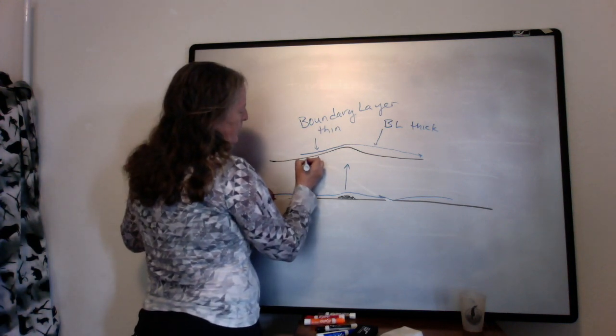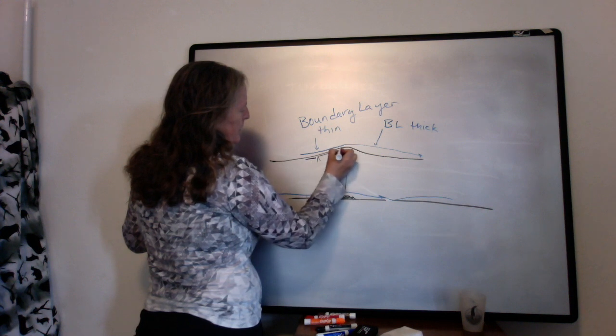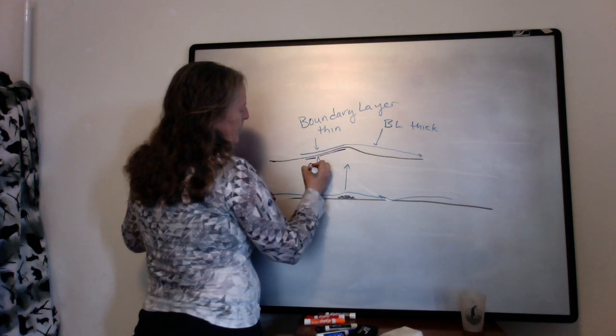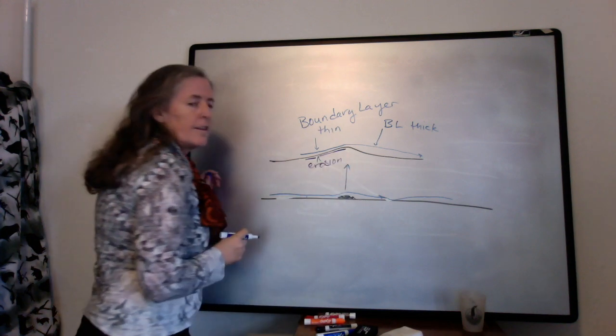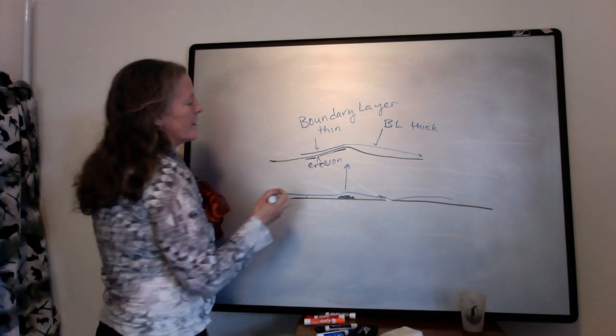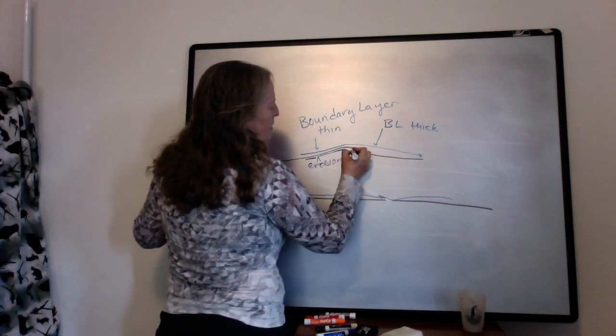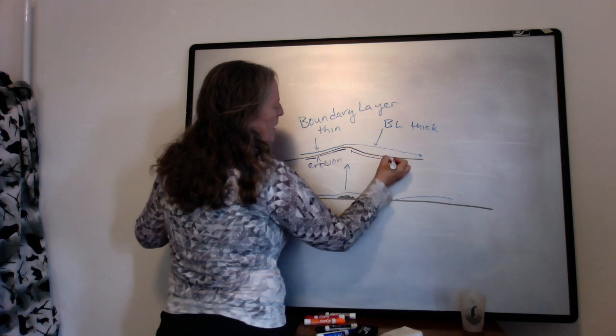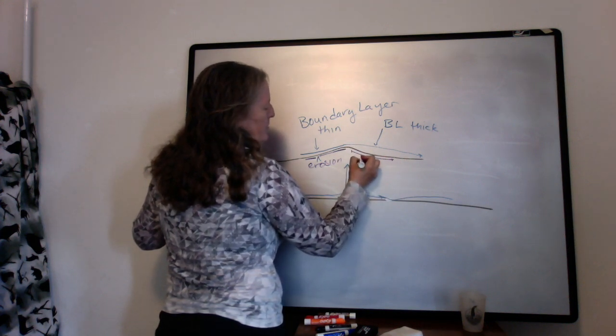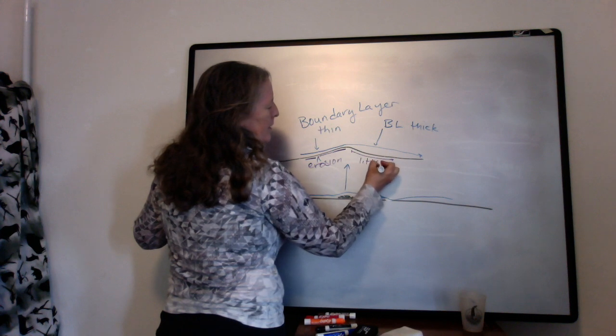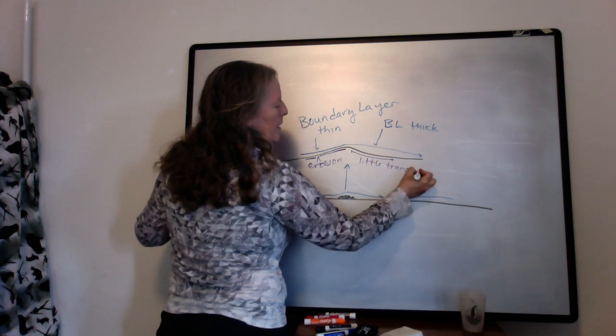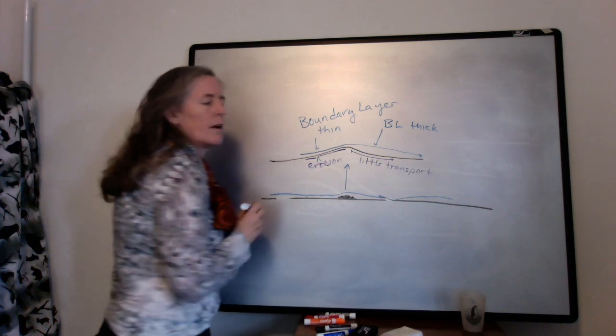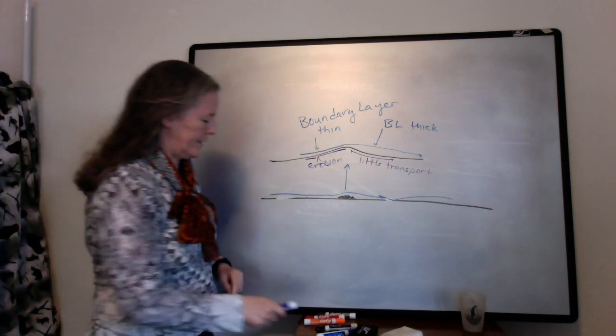So in this zone here, you get erosion of grains. The effect of flow speed is higher. And in this zone here, you tend to have little transport of the grains, because that boundary layer is thicker.